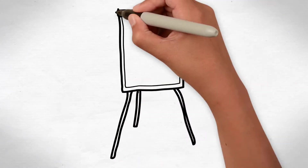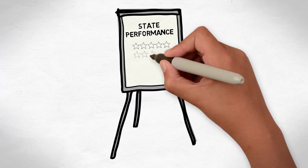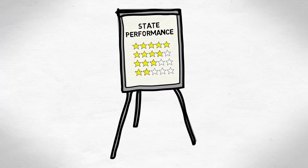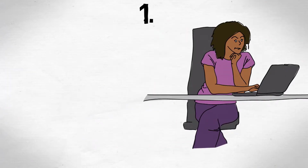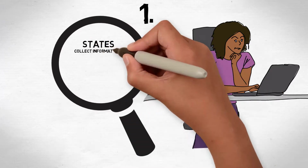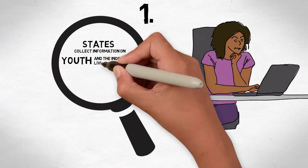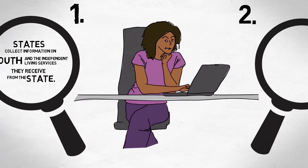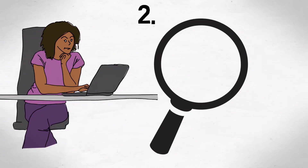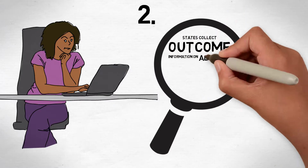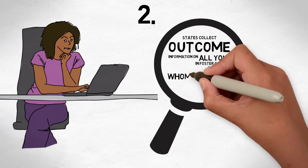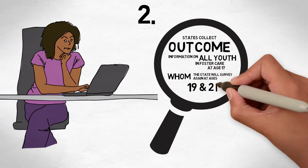States are required to assess their performance in delivering services to assist youth in making a transition from foster care. But how do they do this? First, states collect information on youth and the independent living services they receive that are paid for or provided by the state. Second, states collect outcome information on all youth in foster care at age 17, whom the state will survey again at ages 19 and 21.